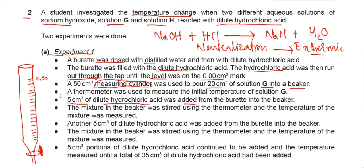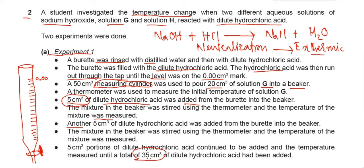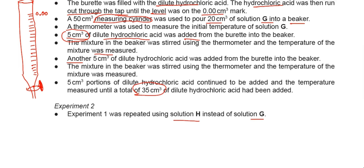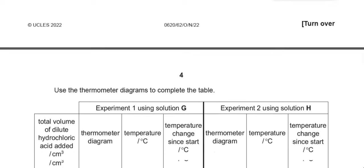Five cm³ of dilute hydrochloric acid was added at a time in portions of five. After each 5 cm³ addition, the mixture in the beaker was stirred using the thermometer and the temperature was measured. Initially we must note down the temperature. This was repeated until a total of 30 cm³ of HCl was added to Solution G, and then the whole experiment was repeated using Solution H instead of Solution G.